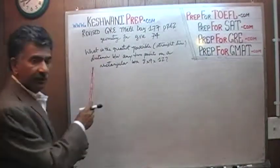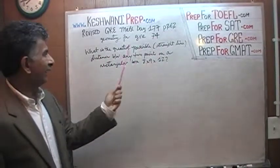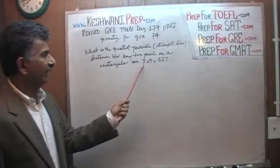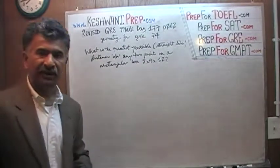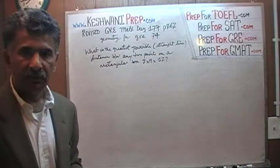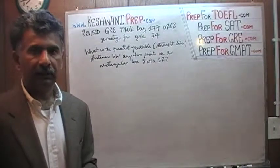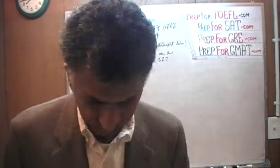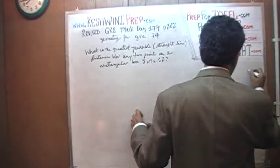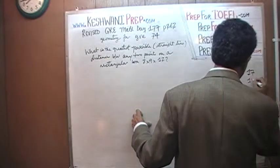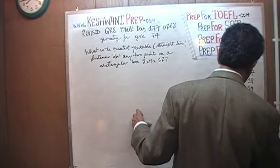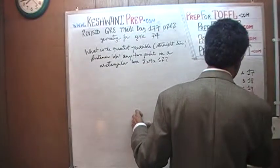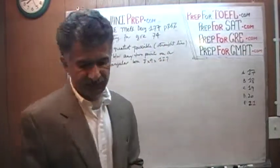Yesterday I gave a homework at the end of the lesson, which is a very similar question to page 262, number 14. Here's the question: What is the greatest possible straight line distance between any two points on a rectangular box 8 by 9 by 12? The answer choices are 17, 18, 19, 20, and 21.